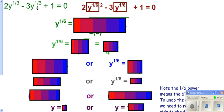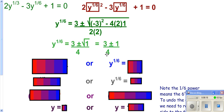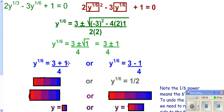This equation is also quadratic in form because you have three terms, two with variables, and this exponent is double the other. You could try to factor it or use the quadratic formula, solving it for what's in your box — which is y to the 1/6. Using the quadratic formula, it simplifies down. You get y to the 1/6 equaling two values: adding the top gives 4 over 4, which is 1, and subtracting gives 2 over 4, which is 1 half.